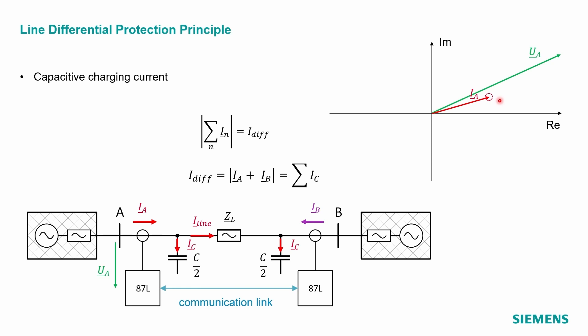Up to now, we only looked at ideal lines. For a real line, we will have some line impedance, ZL, but also line capacitances to ground and between the phase conductors. This is a P model of a real line.